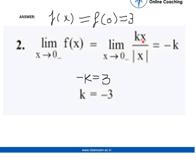So we can solve it as kx upon minus x. We will be taking minus of this x because the value of x is less than 0. So eventually x is cancelled and we will get minus k. So minus k equals 3, eventually k equals minus 3.